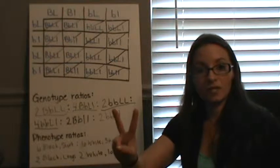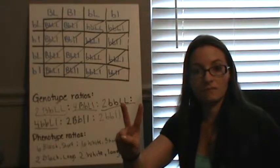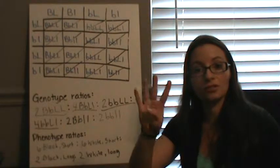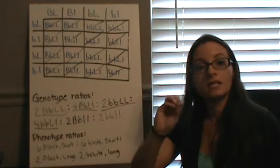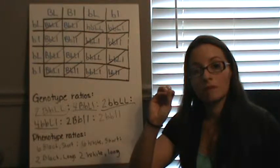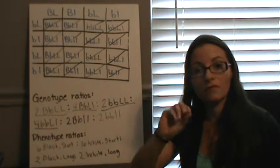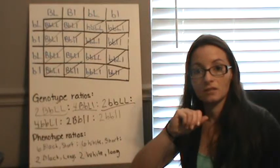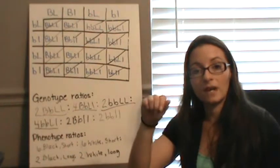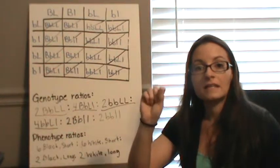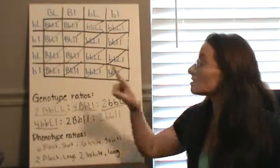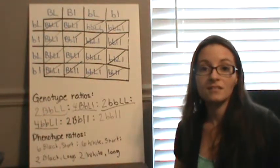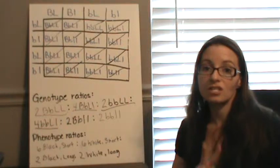This is how you complete a dihybrid cross. You have two different combinations of genes for two different parents, so you're going to have four different letters. Each column or row for the Punnett square is going to have two different letters from each of the parents, and each box from the offspring is going to have four different letters, giving you the combination of two different genes to look at.